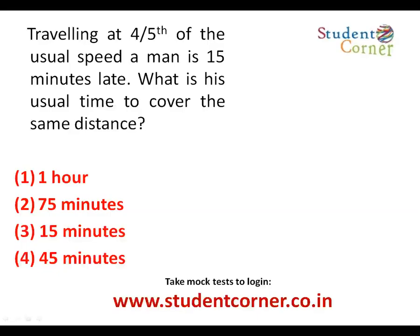The next excellent applicative question: traveling at 4/5th of its usual speed. Let us assume the usual speed as S. Now the speed is 4/5th of the usual speed. So the ratio of usual speed to new speed is 5 is to 4 — the usual speed is 5 and the decreased speed is 4. According to the inverse relation of speed and time, the time ratio is now 4 is to 5.